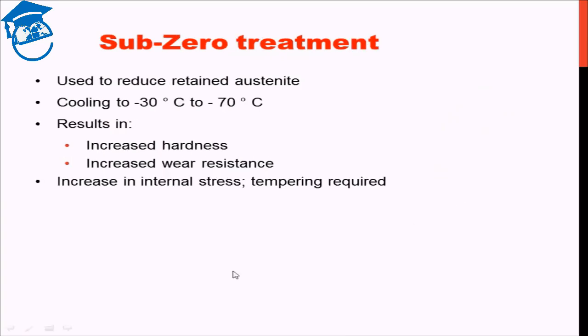And the final heat treatment that we will discuss is known as subzero treatment. If you remember, I said that during martensitic formation in hardening process or even in the martempering process, we do not really get 100% martensite. We have some martensite plus retained austenite and the amount of martensite we obtain depends on the temperature. Temperature decides how much martensite we'll have. Lower we go into the temperature, more will be the amount of martensite formed. Thereby less will be the retained austenite formed.